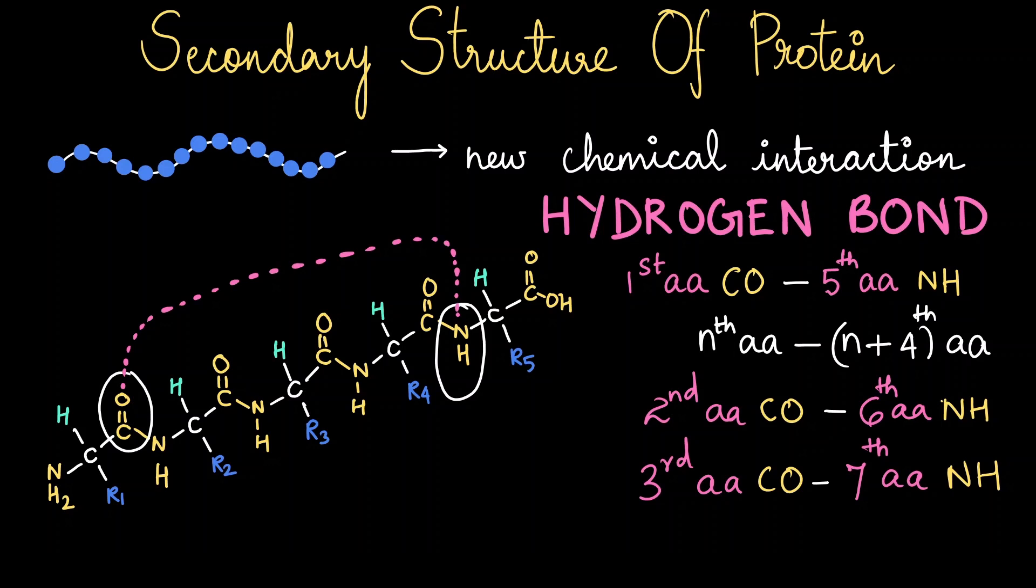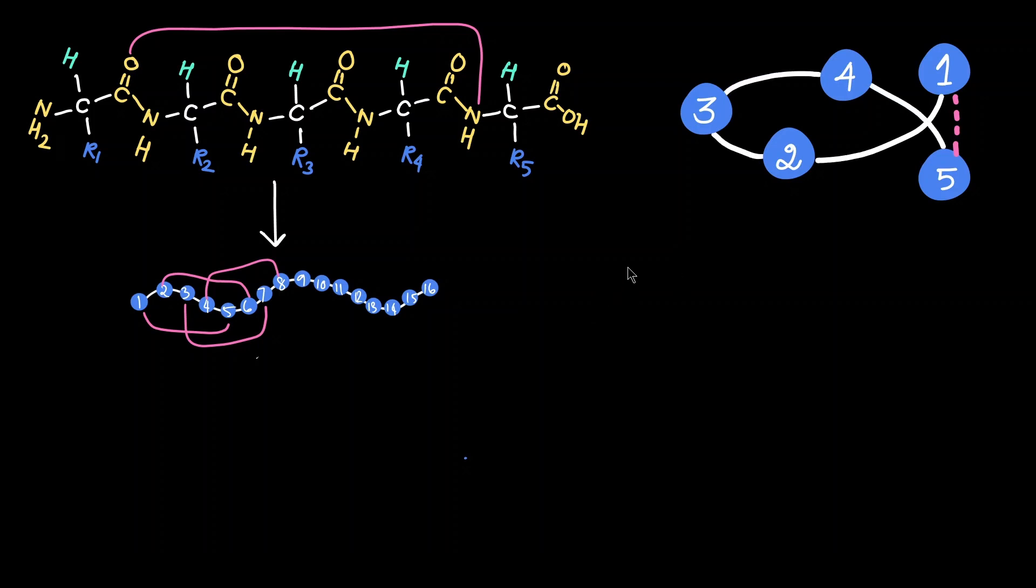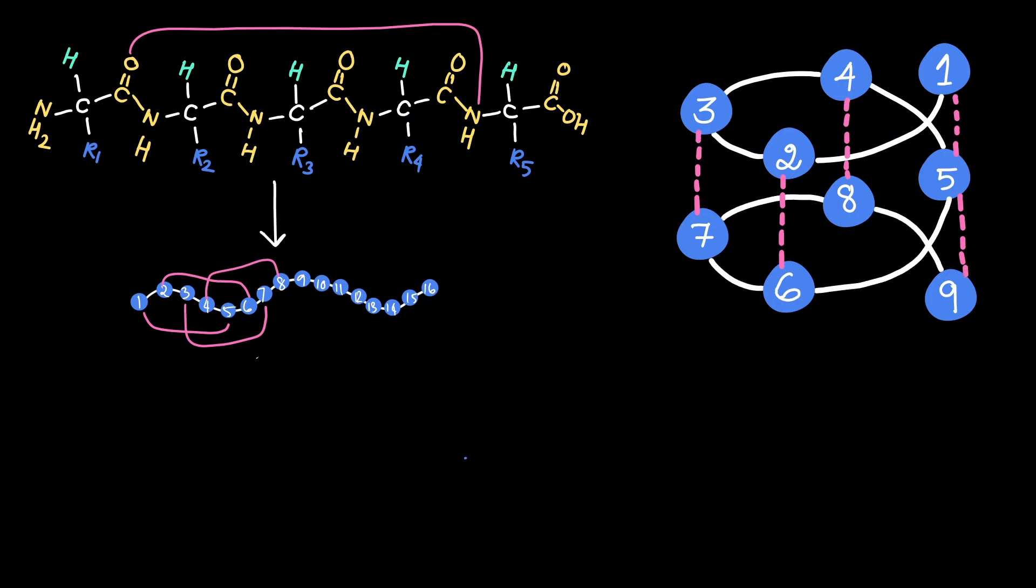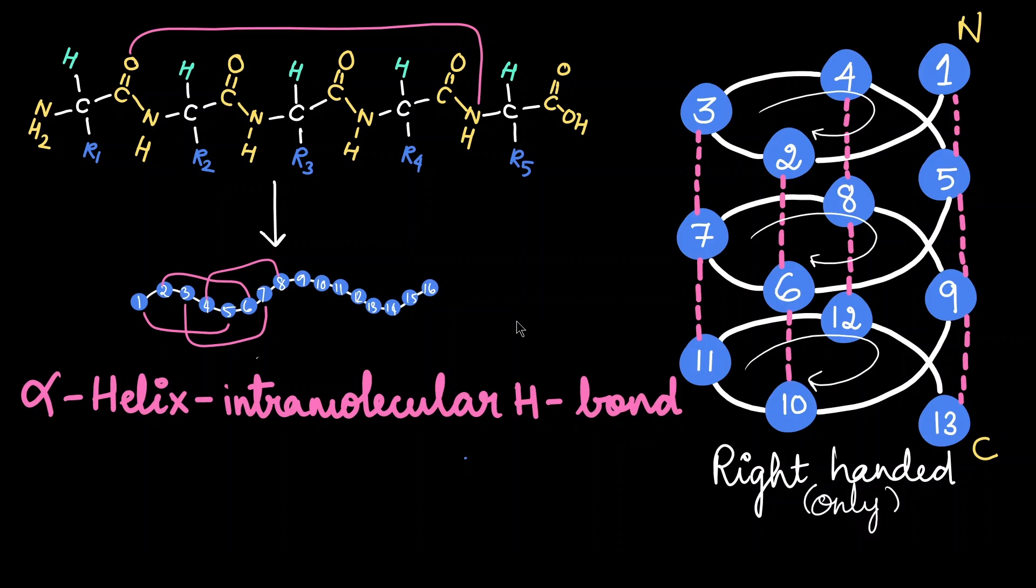The first amino acid interacts with the fifth amino acid, which then forces the second, third, and fourth amino acids to form a loop. This automatically curves the primary structure. This bonding pattern is repeated for every amino acid until it forms a bunch of connected loops of hydrogen bonding. When this pattern is repeated for a certain section of the primary structure, we end up with a very stable coil—this is the alpha helix.